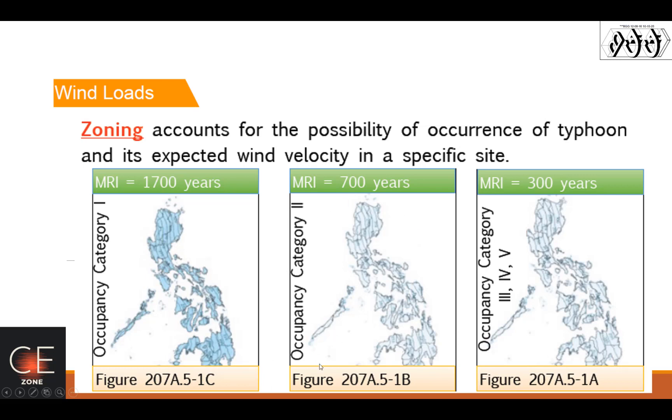So Occupancy Category 1, you have a mean recurrence interval of 1,700 years. So you refer your wind contour mapping with Figure 207A.5-1C. For Hazardous Facilities, you refer to 207-1B. And then for Occupancy Category 3, 4 and Category 5, you refer to 207A.5-1A.